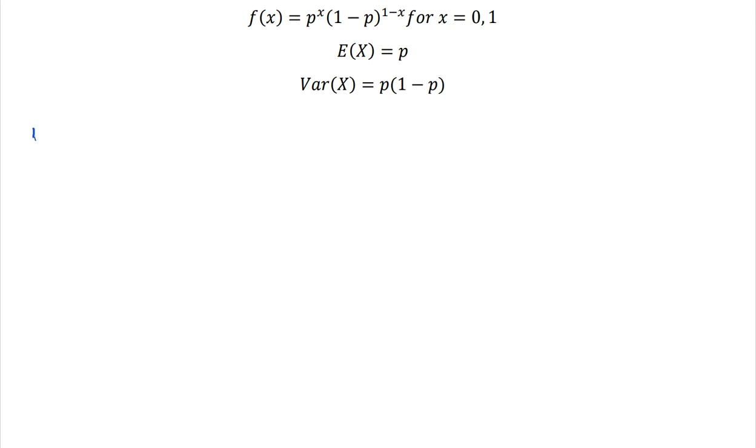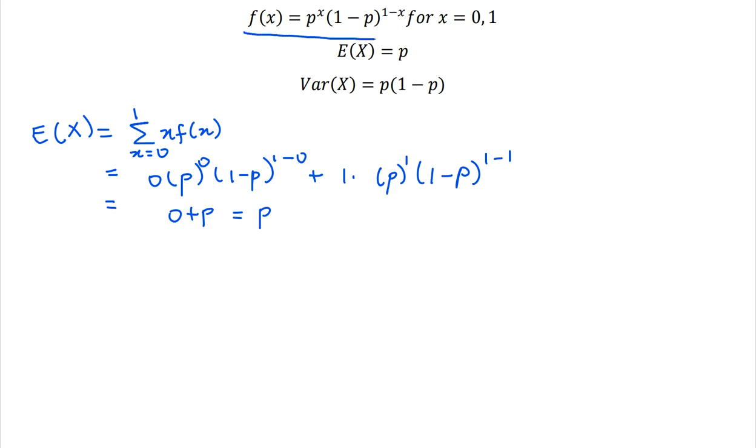So we say the expectation becomes the summation of x multiplied by the probability mass function by the x values. In this case, we start from 0 to 1 and this becomes 0. If you multiply this, it'd be the exponent of 0 and then it's 1 minus p, 1 minus 0 plus 1 times and then 1 minus 1, which becomes 0 plus p. So the expectation becomes p. We simply substituted the value of x into this given probability mass function.